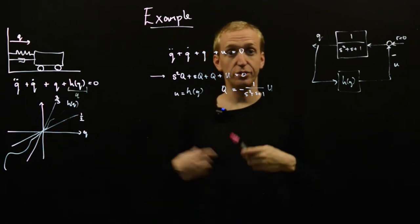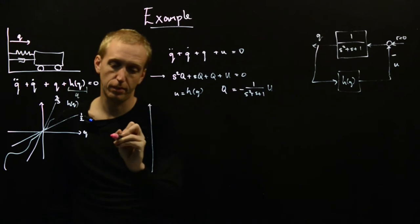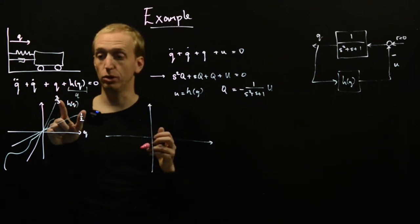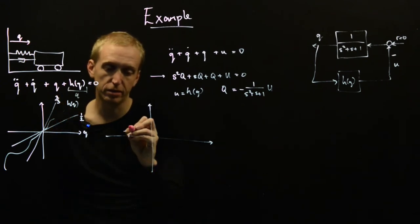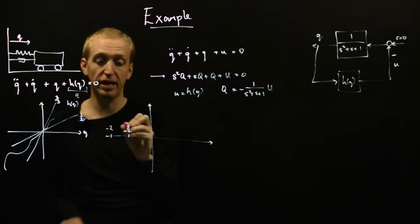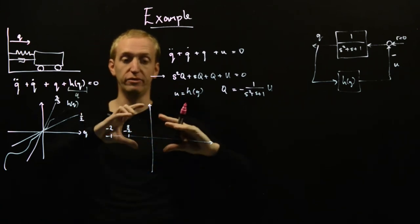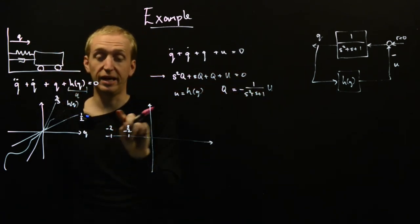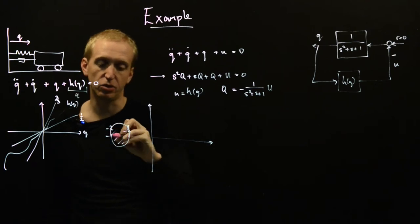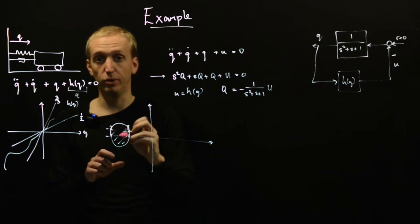Our nonlinearity is sector-bounded, so now we're ready to apply the circle criterion. We have to draw a circle — we draw the complex plane and mark the −1/k points, where the k's are the slopes of the two sectors. So we mark −1/(2/3) = −3/2, and −1/(1/2) = −2. Since both k's are positive, we're in Case 1. We draw the circle connecting these two −1/k points symmetrically with respect to the real axis, and fill in the inside.